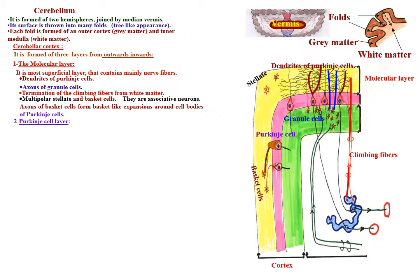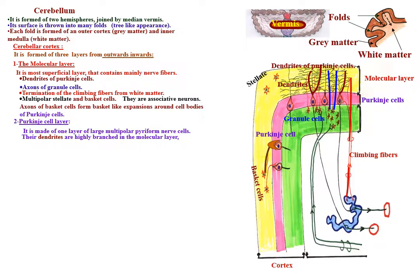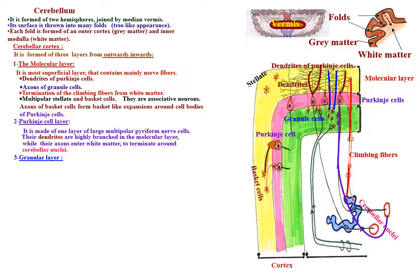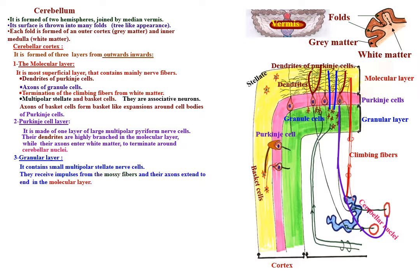The Purkinje cell layer is made of one layer of large multipolar pyriform nerve cells. Their dendrites are highly branched in the molecular layer, while their axons enter the white matter to terminate around the cerebellar nuclei. The granular layer contains small multipolar stellate nerve cells that receive impulses from the mossy fibers, and their axons extend to end in the molecular layer.